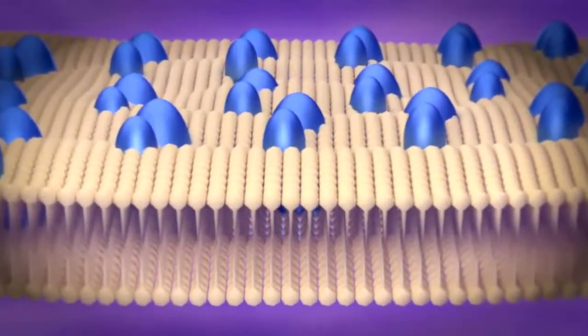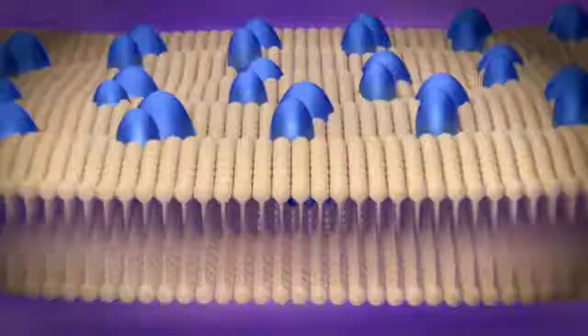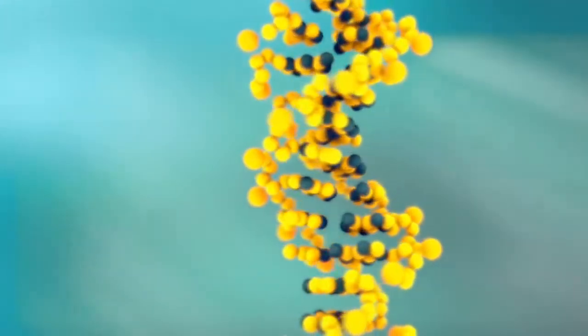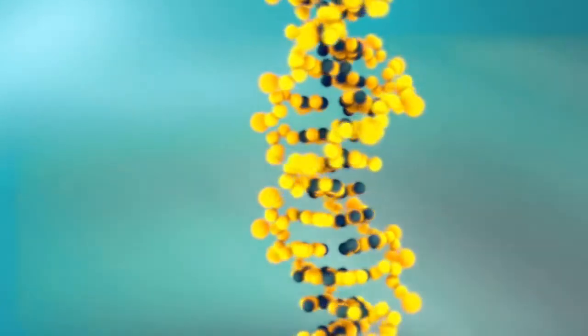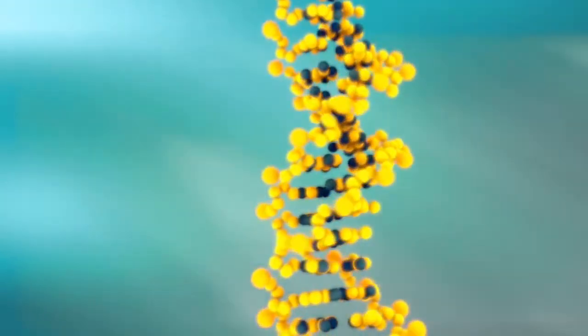After the chromosomes line up in the middle of the cell, they then separate to opposite sides, still connected to the microtubules. The cell then grows longer, further separating those masses of chromosomes.